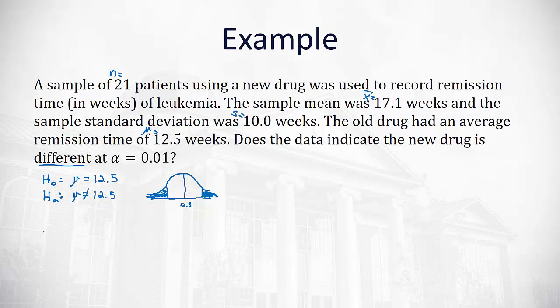Now the formula for t is very similar to the formula for z. t is equal to our x bar minus the mean divided by the sample standard deviation, divided by the square root of the sample size.